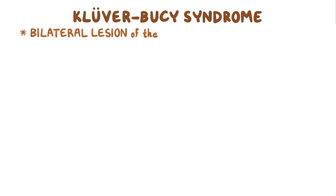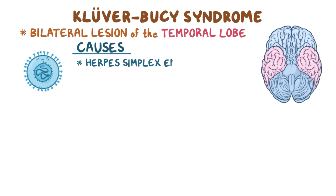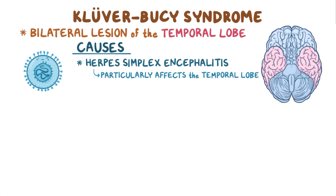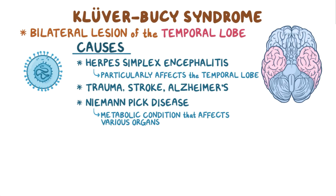In Kluver-Busey syndrome, there is a bilateral lesion of the temporal lobe. The most common cause of such a brain lesion is herpes simplex encephalitis, which is a viral infection that particularly affects the temporal lobes. Other causes of Kluver-Busey syndrome include trauma, stroke, Alzheimer's disease, and Niemann-Pick disease, which is a rare metabolic condition that affects various organs of the body, including the brain.